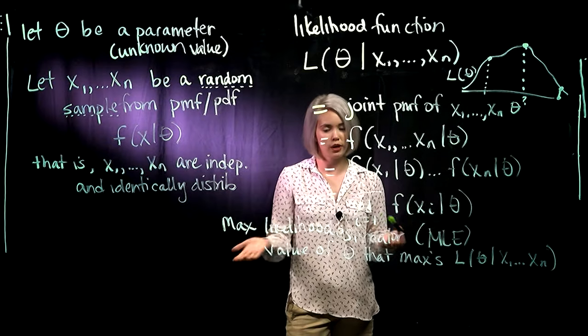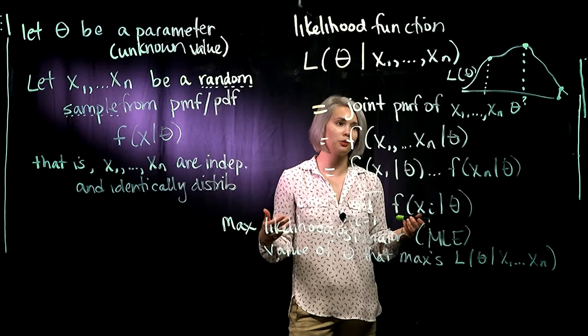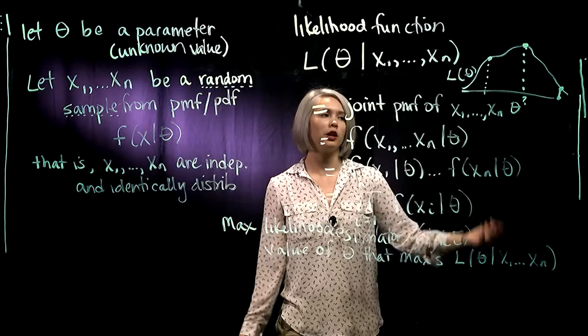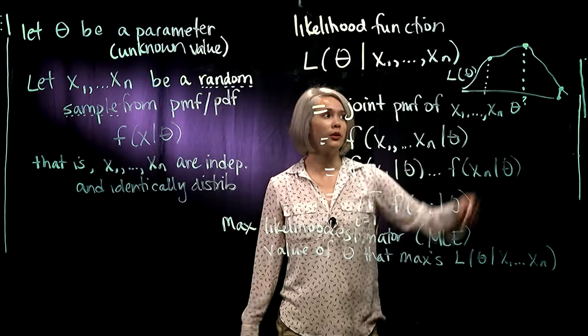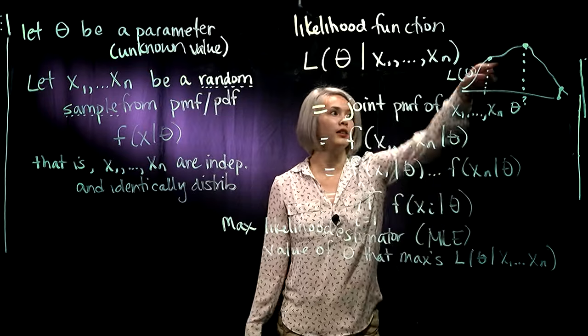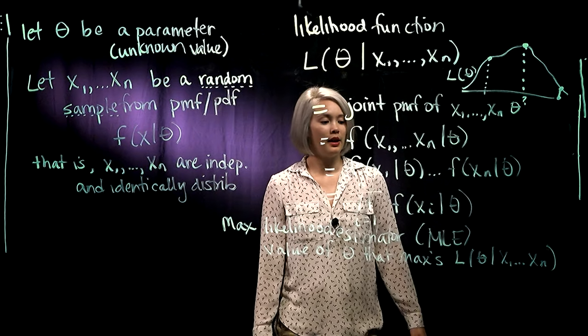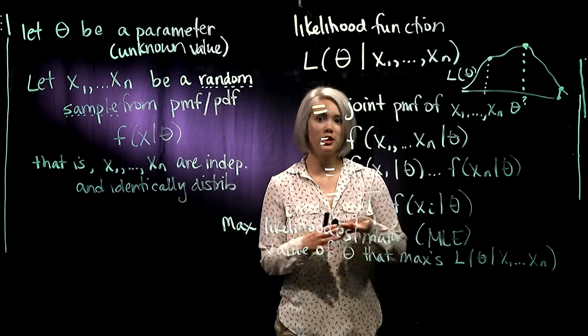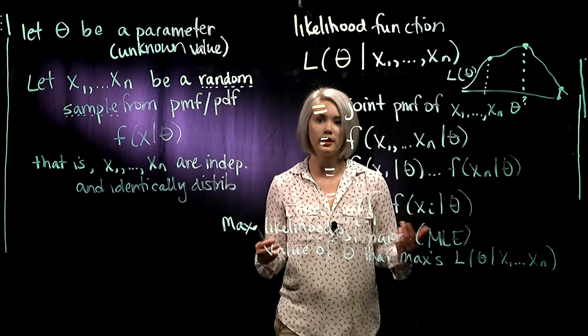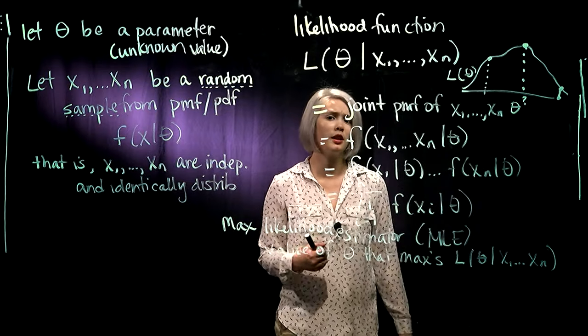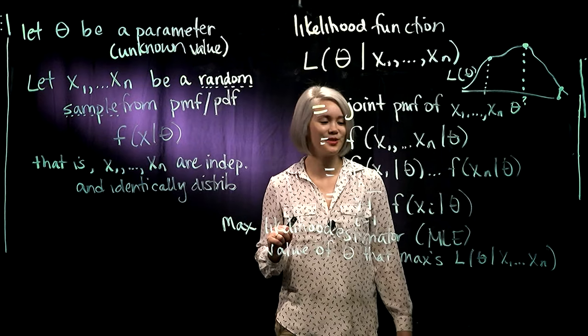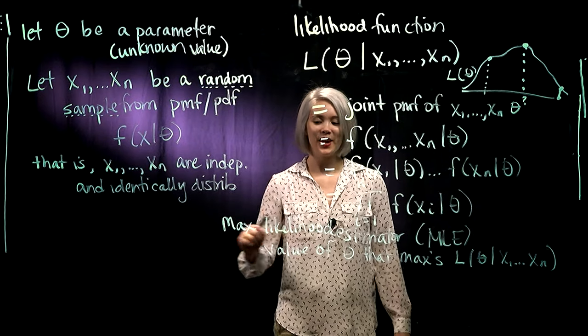So if we have some experience with calculus, and if this likelihood function is pretty nice, then we can just go ahead and use calculus to take derivatives and find the maximizer. For the stuff that we're doing in this class, it will be usually pretty much that simple as just using calculus. There are cases where it is harder to find the maximizer, but we'll either save that for later or not talk about it at all.